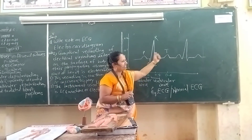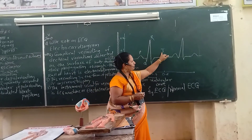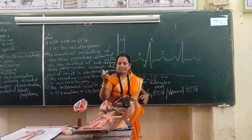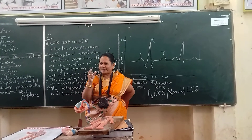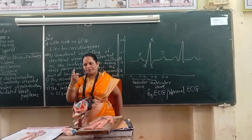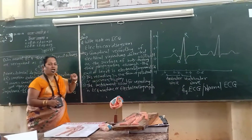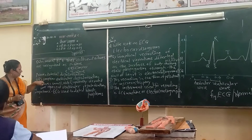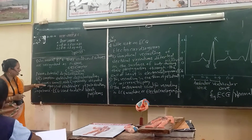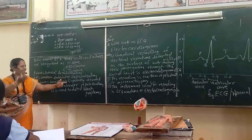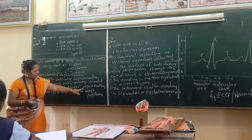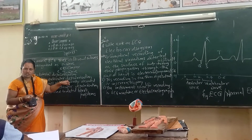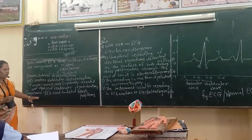The last wave is the T wave, which represents ventricular relaxation, also called ventricular repolarization. In summary: the P wave represents auricular depolarization, the QRS complex represents ventricular depolarization, and the T wave represents ventricular repolarization. Depolarization is recorded at the time of contraction, and repolarization is recorded at the time of relaxation.